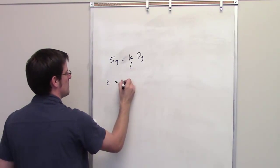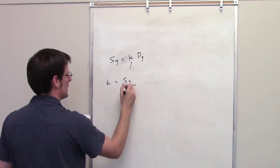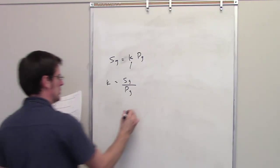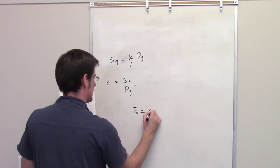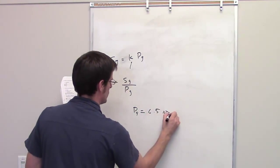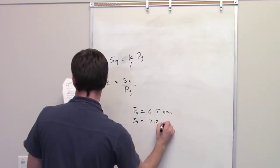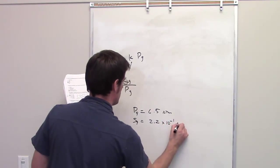Algebraically, we can solve for K by noting that it is going to be equal to the solubility divided by the partial pressure. We then read the rest of the problem. It tells us that the partial pressure of CO2 in this scenario is 6.5 atmospheres. It tells us that the concentration is 2.2 times 10 to the negative 1 molar.